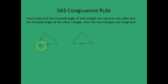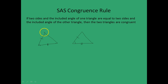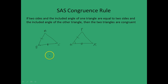There is a notation attached to congruency which I should mention here. If one triangle were labelled A, B, C and the other were P, Q, R, the notation for writing that triangle ABC and triangle PQR are congruent would be: triangle ABC is congruent to triangle PQR.